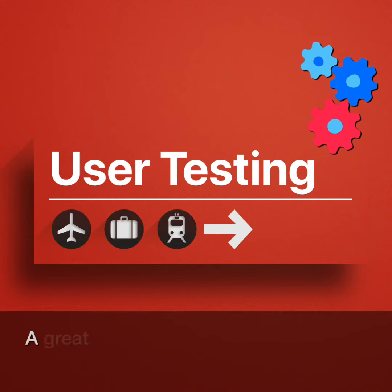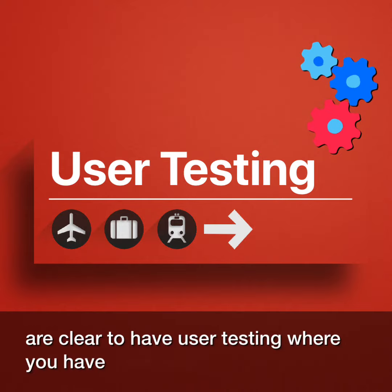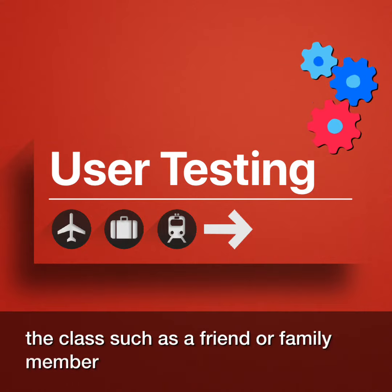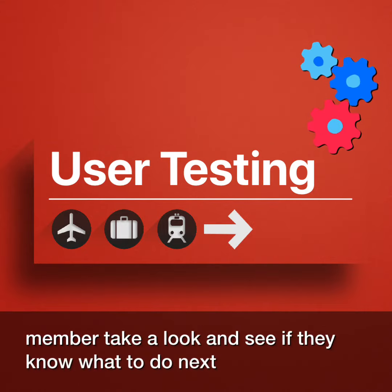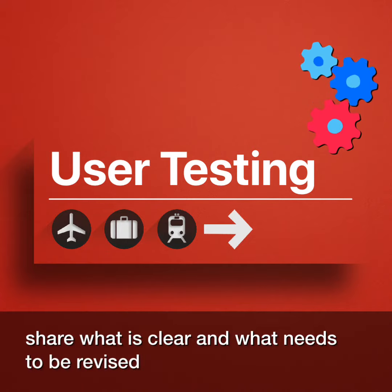A great way to see if your instructions are clear is to have user testing, where you have someone who isn't part of the class — such as a friend or family member — take a look and see if they know what to do next. They can help share what is clear and what needs to be revised.